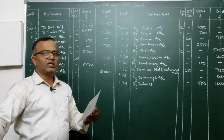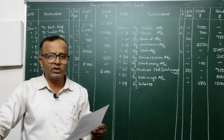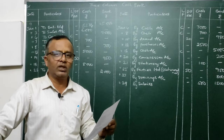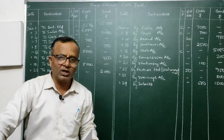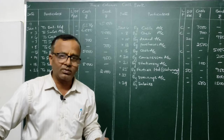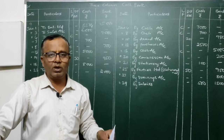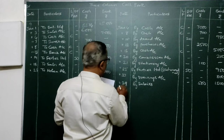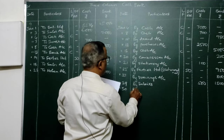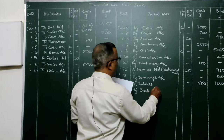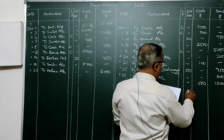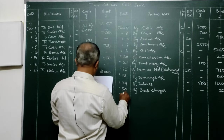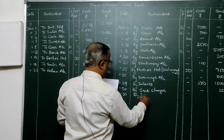Bank charges 20 and insurance 500 as shown by the passbook — these are expenses met from the bank account. Entry for bank charges: Bank Charges Account Dr. To Bank. Entry for insurance premium: Insurance Premium Account Dr. To Bank. Post 'By Bank Charges' — 20 in bank column, and 'By Insurance Premium' — 500 in bank column.